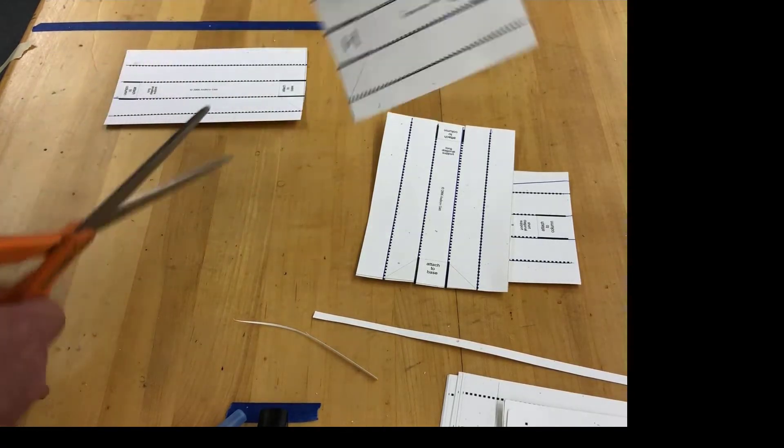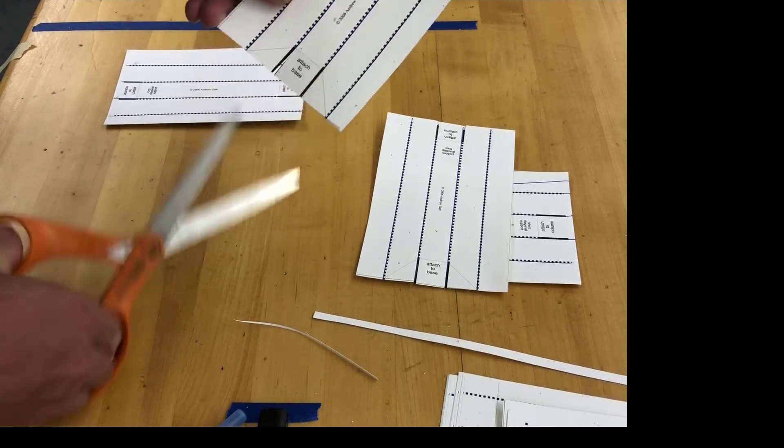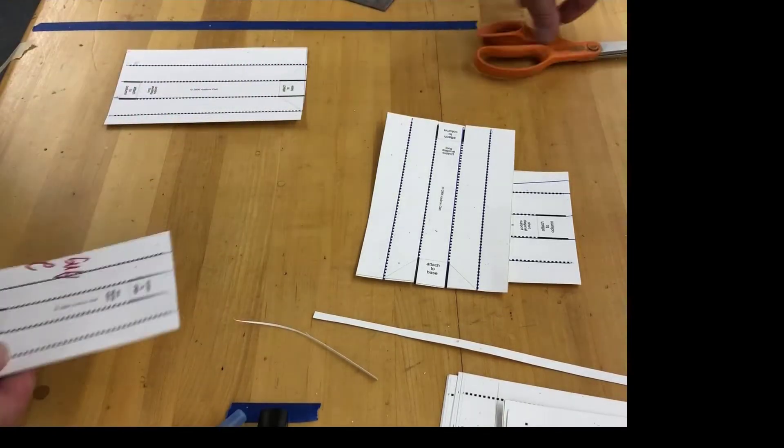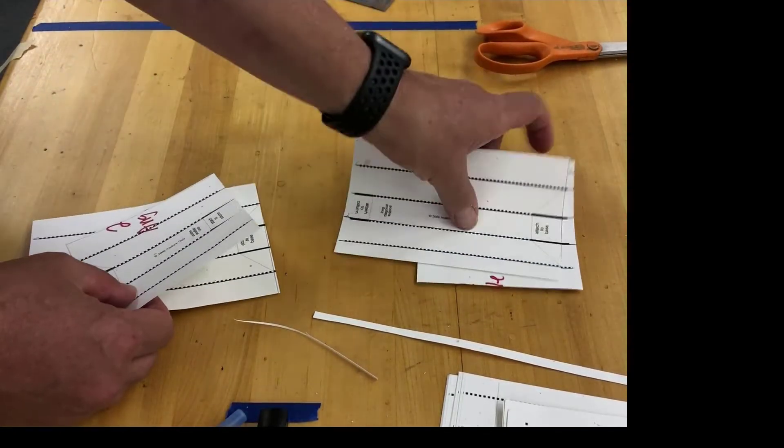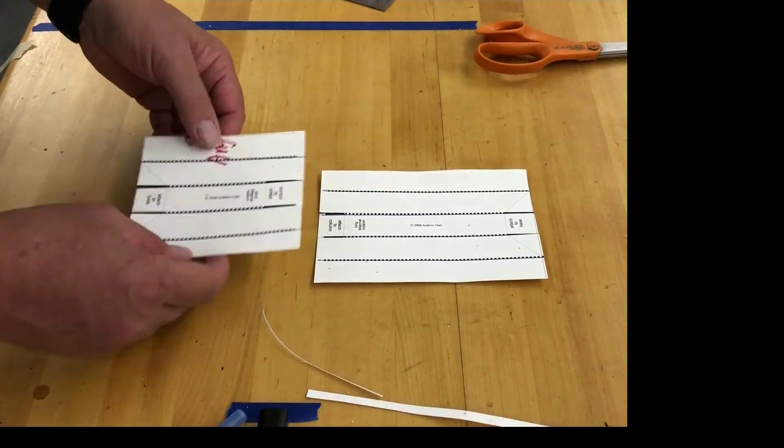We're cutting the dotted line there. Here and here. We're not cutting on these dotted lines, that's gonna be a fold in a little bit. So now I have my two angle braces.